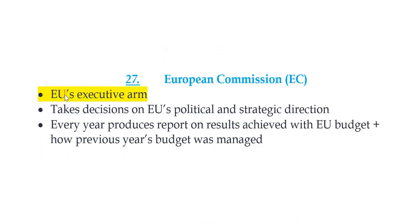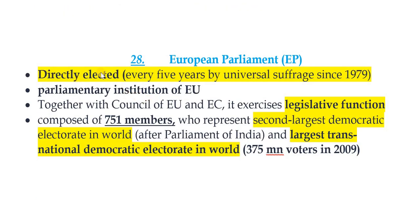The European Commission is the European Union's executive arm. It takes decisions on the EU's political and strategic direction and produces an annual report on results achieved with the EU budget. The European Parliament is a directly elected parliamentary institution of the European Union, elected every five years by universal adult suffrage since 1979. Together with the Council of the European Union, it exercises the legislative function. It is composed of 751 members, representing the second largest democratic electorate in the world after the Parliament of India, and the largest transnational democratic electorate, with 375 million voters in 2009.